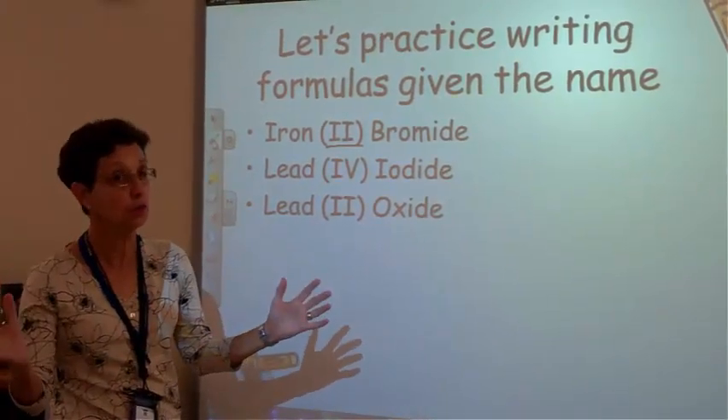We're going to try to write the formulas for these compounds. Notice, here's the Roman numerals. But I'm going to assume that you know the Roman numerals. So this means 2. So the first thing I'm going to write is the symbol. I'm going to write Fe. And the charge, the Roman numeral tells me the charge. So that is a charge of plus 2.